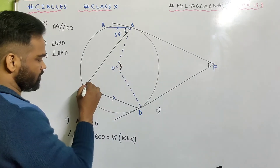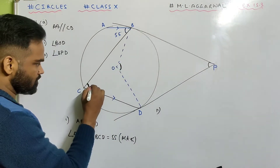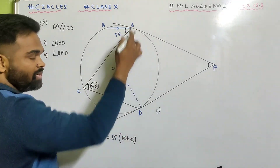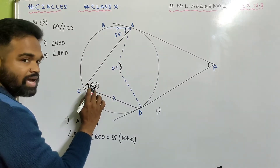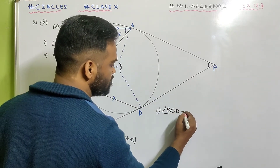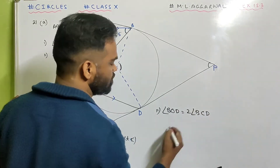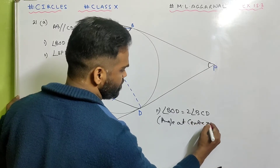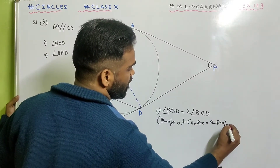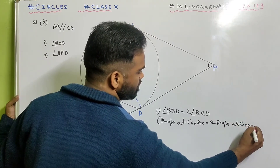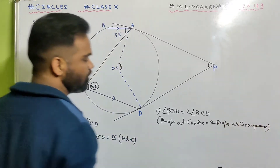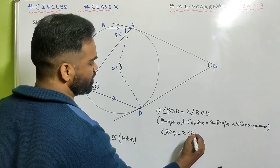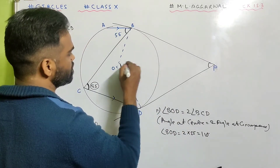Angle at the center is twice the angle at circumference. Angle BOD is twice angle BCD. So angle BOD equals twice 55 degrees, which is 110 degrees.